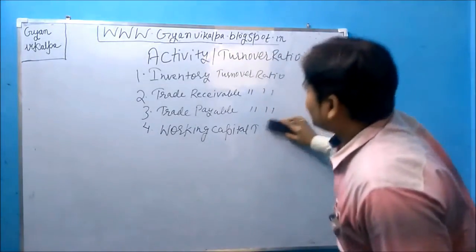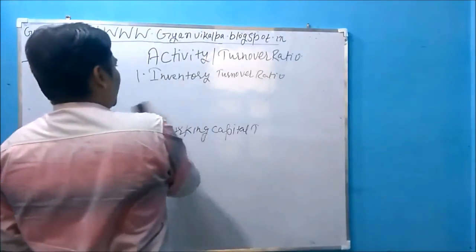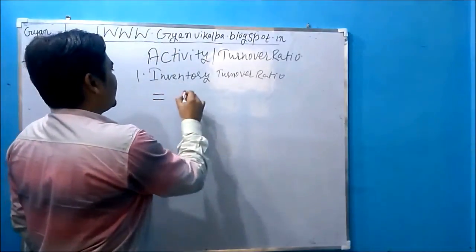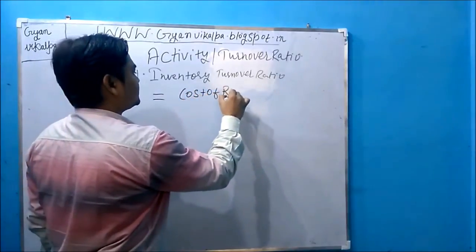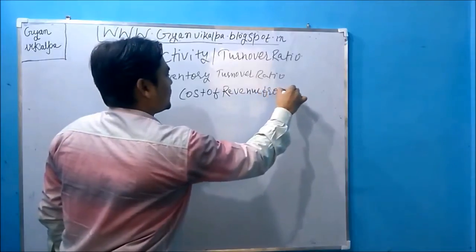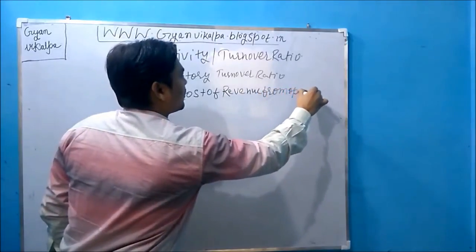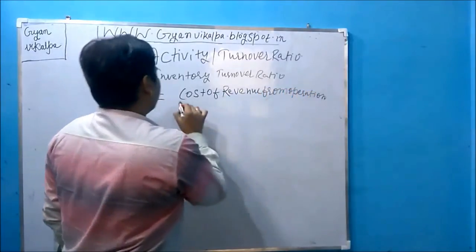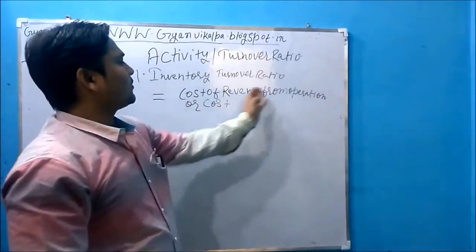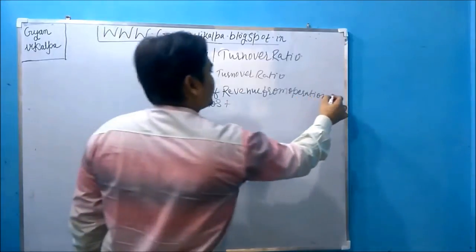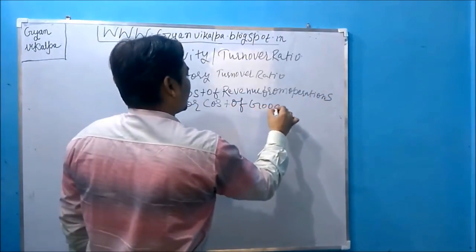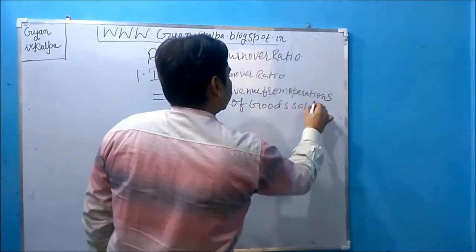Number one: inventory turnover ratio. The formula for inventory turnover ratio is cost of revenue from operations — also called cost of goods sold — upon average inventory. As per the new format we name it cost of revenue from operations; as per the old format we say cost of goods sold.